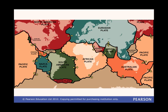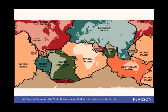A good example of a destructive boundary with a subduction zone is between the Nazca plate and the South American plate. The Nazca plate is being subducted under the South American plate. And what happens when two continental crust plates meet? This is called a continental collision. One example of where this is happening is between India and Asia, forming the Himalayas, the world's highest mountain range.